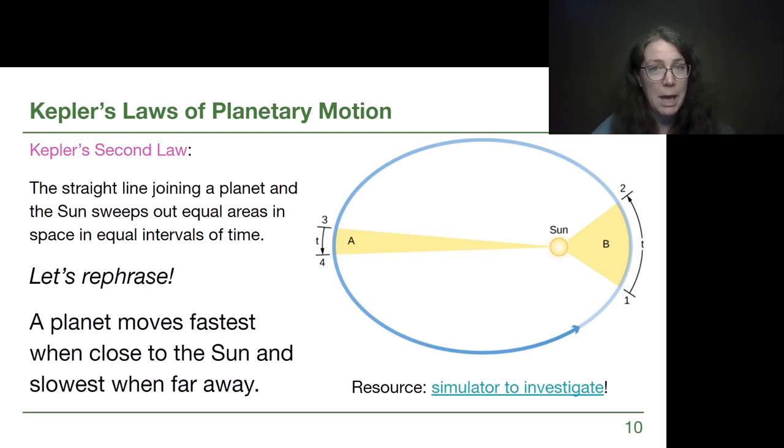Kepler's second law is very mathy. The straight line joining a planet and the sun sweeps out equal areas in space in equal intervals of time. Before I rephrase it, you can certainly read this slide if you want to, but let's look at the diagram from our textbook.